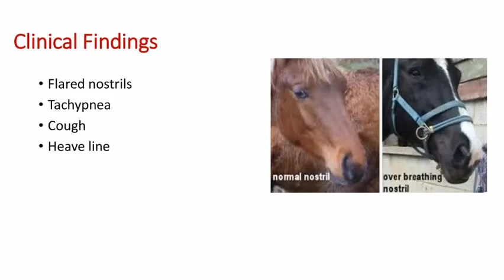Coming to the clinical findings — these are: flared nostrils, tachypnea, cough, and heave line. These pictures show a normal horse on the left side, and in the right picture there is over-breathing or flared nostrils.